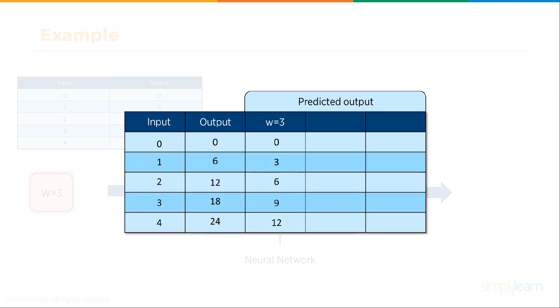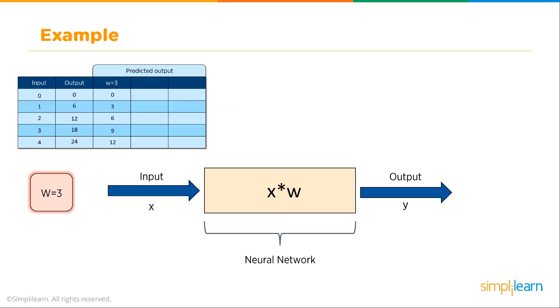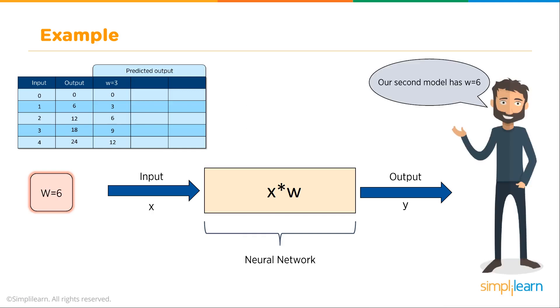Then we have 1 times, we put the 1 in. We're looking for a 6, but we get a 3 instead. We put the 2 in, we're looking for a 12, we get a 6 instead. You can see here our predicted output doesn't match the output we're looking for. We have our W equals 3 and we come up with the second model where W equals 6.